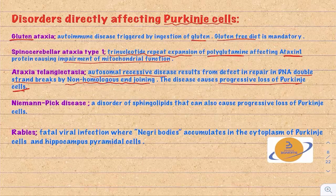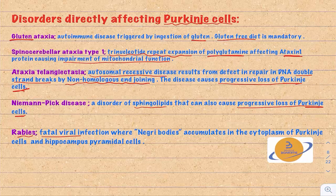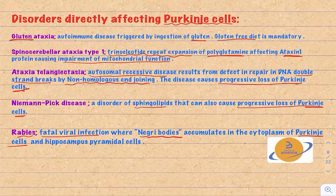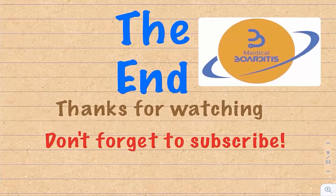Niemann-Pick disease is a disorder of sphingolipid metabolism that can also cause progressive loss of Purkinje cells. Finally, rabies is a fatal viral infection in which Negri bodies accumulate in the cytoplasm of Purkinje cells and hippocampal pyramidal cells.